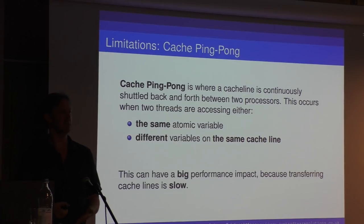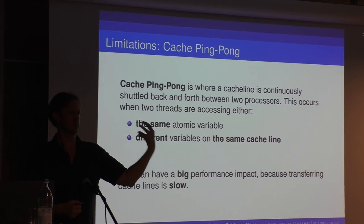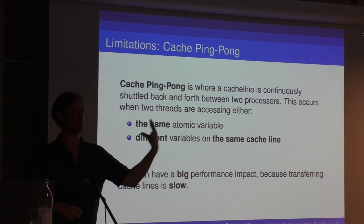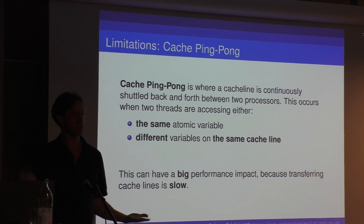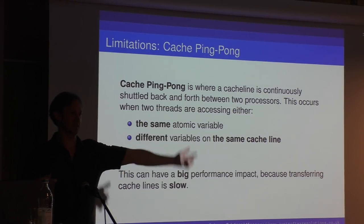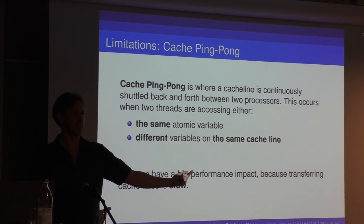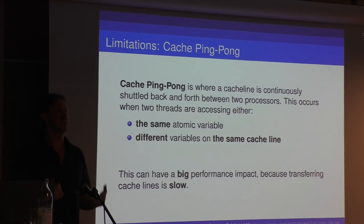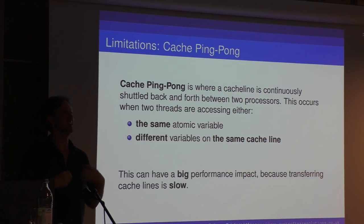The explicit problem that you get with sharing is cache ping-pong — the cache line is pinging back and forth between the CPUs. CPU A is accessing a memory location and trying to do a write, so it needs control of the cache line. A second CPU also wants to write to that cache line at a different memory location, but on the same cache line. So the cache line has to be transferred to the second CPU. The first CPU then tries to access the memory again, and it has to be transferred back again — ping-pong, back and forth. This takes time and can have a big impact on performance, because transferring cache lines is slow.